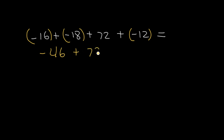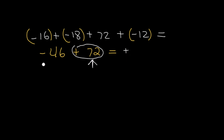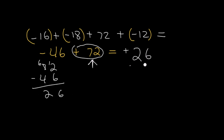Add 72, and take the sign of 72 because it's the biggest number — the number farthest from 0. The final answer will be positive. Subtract 46 from 72. You cannot subtract from the 2, so borrow from the 7. 12 minus 6 is 6, and 6 minus 4 is 2. The final answer is 26.